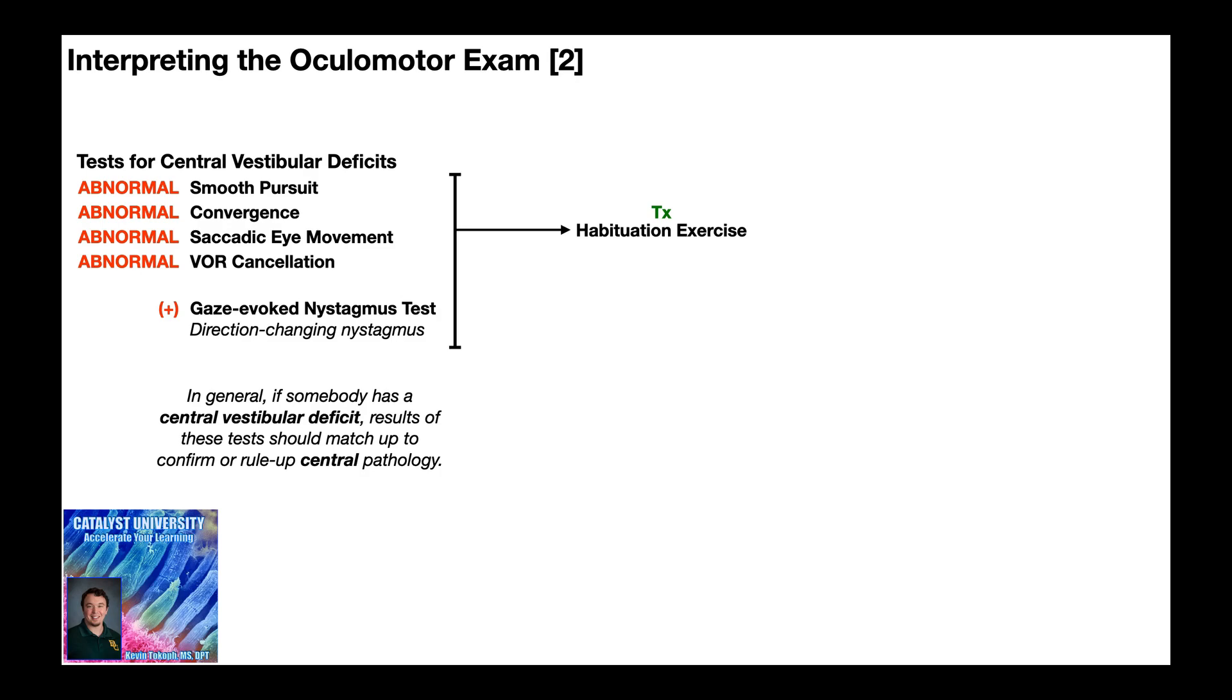Now recall that the tests that are more suggestive of peripheral vestibular deficits, so a positive head thrust test, a positive head shake nystagmus test, and then a positive gaze-evoked nystagmus test, where you have direction-fixed nystagmus, those are indicative of a hypofunction, but then the treatment approach would be adaptation, so gaze stabilization exercises.